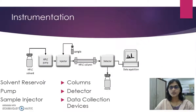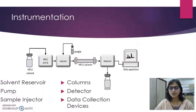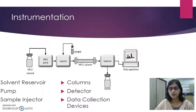Now we will see the instrumentation of HPLC. It consists of a solvent reservoir, pump, injector, column, detector and a device for data acquisition. The solvent reservoir is used to contain the mobile phase, and the pump is used to force a liquid through the liquid chromatograph at a specific flow rate, expressed in milliliters per minute. Normal flow rates in HPLC are in the 1 to 2 ml per minute range. Typical pumps can reach pressures in the range of 6,000 to 9,000 PSI.